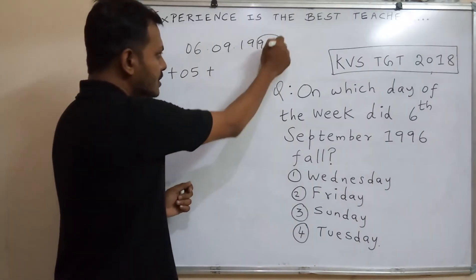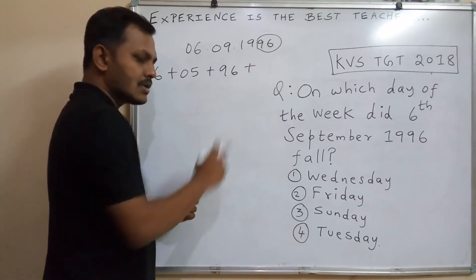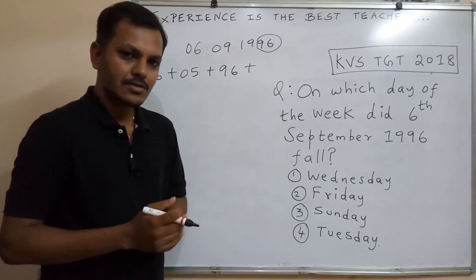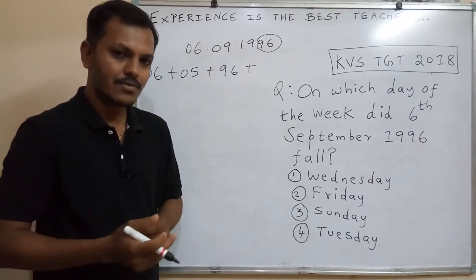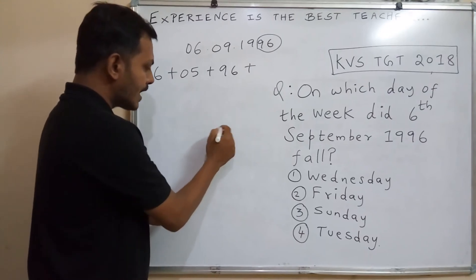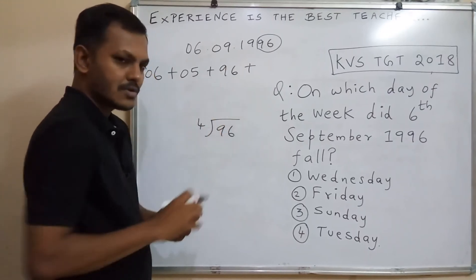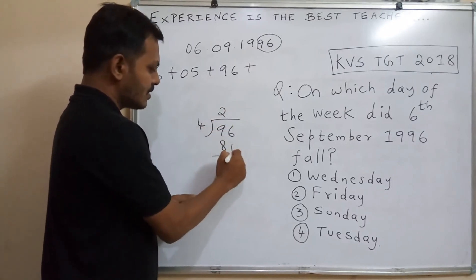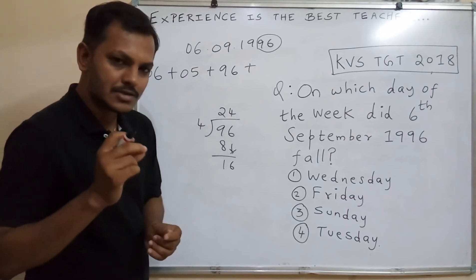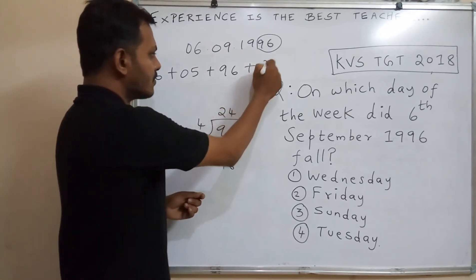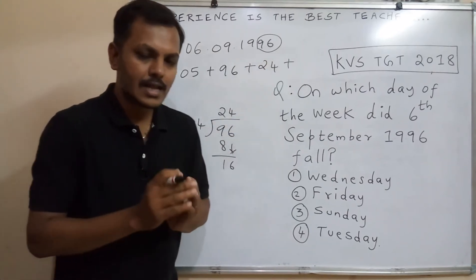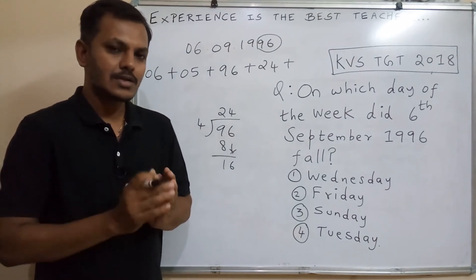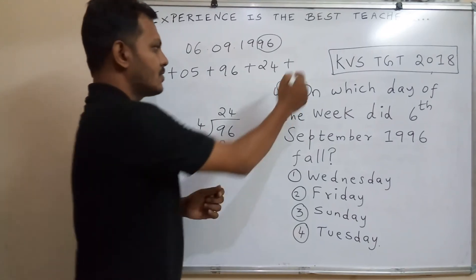The third number is the last two digits of the year: 96. The fourth number is the quotient of 96 divided by 4, which is 24 — we write only the quotient. The remainder is 0 because 1996 is a leap year. The fifth number: 1996 lies in the range 1900 to 1999, and the corresponding century code for that range is 0.